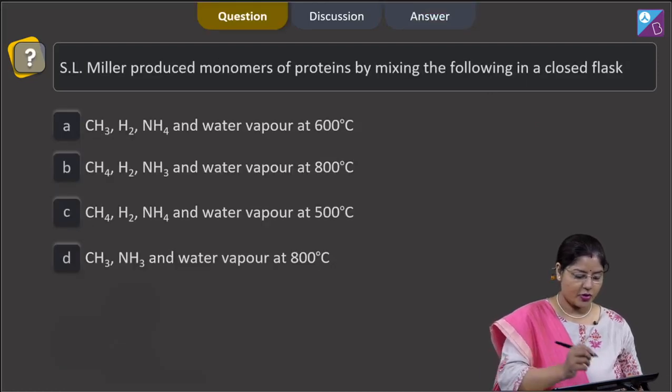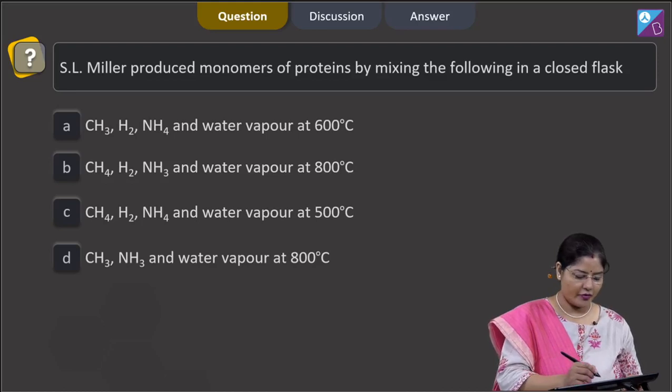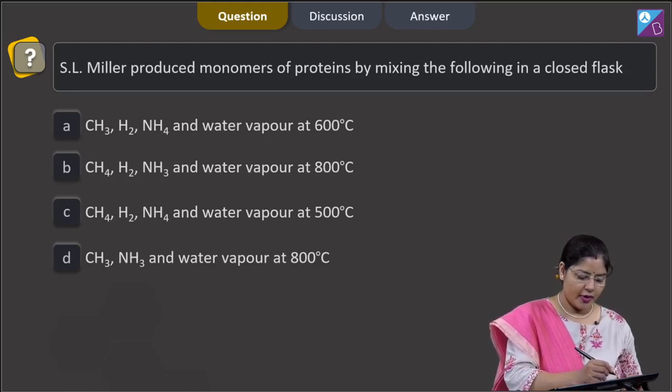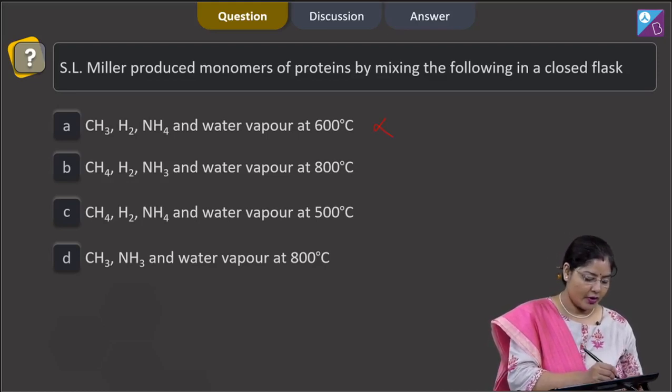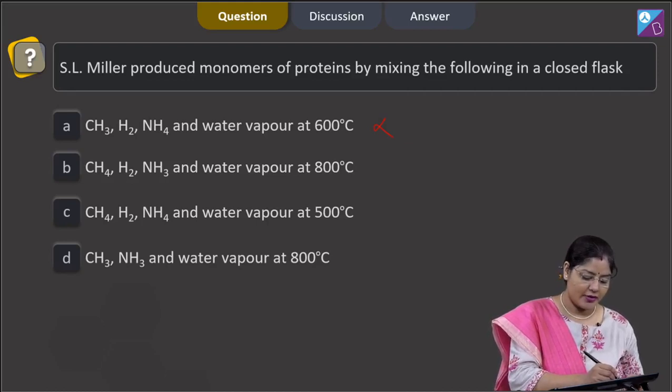Let us proceed to the next question. Question states that S.L. Miller produced monomers of proteins by mixing the following in a closed flask. The options given are: first option CH3, H2, NH4, and water vapor at 600 degrees Celsius. This is incorrect because CH4, that is methane, was present, not CH3.